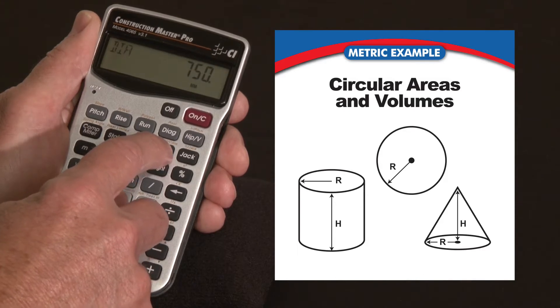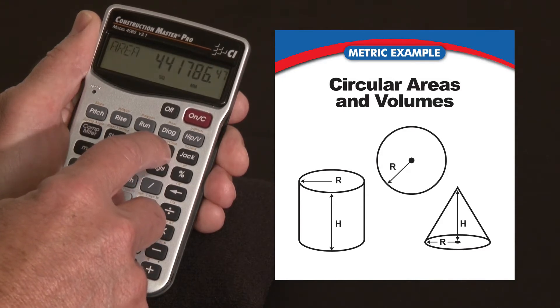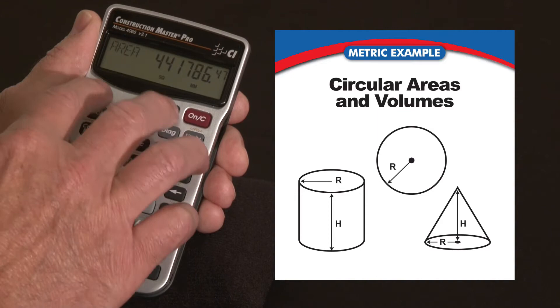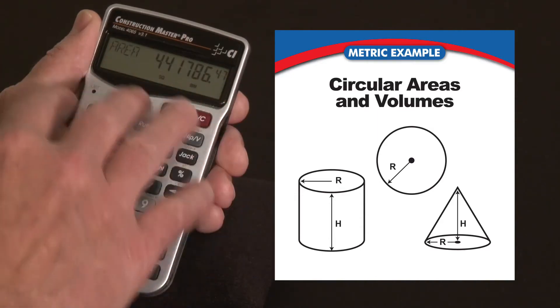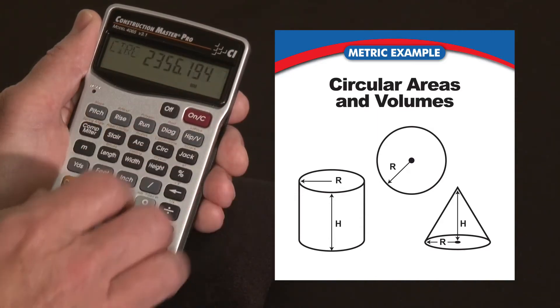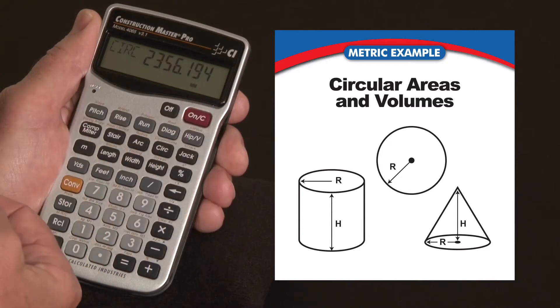So I hit circle. First press enters it as a diameter, second press gives me the surface area, so it's a whole bunch of square millimeters of area. Press it again and it gives me the circumference all the way around the circle.